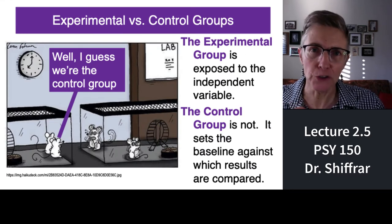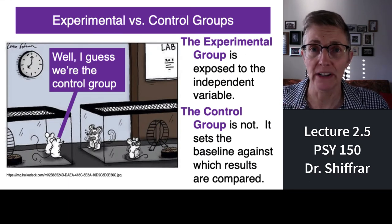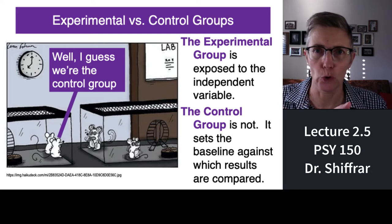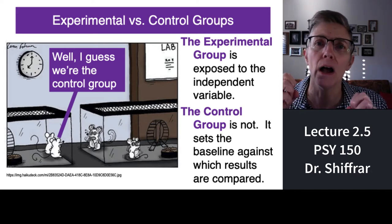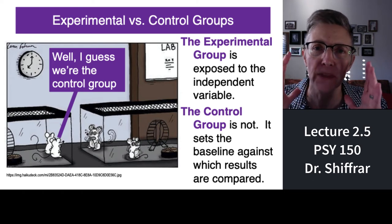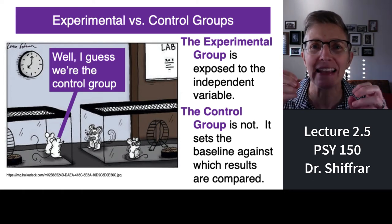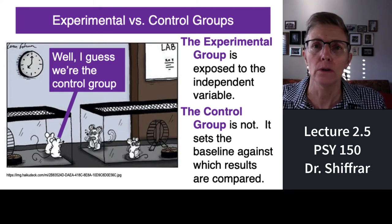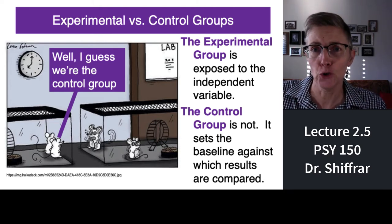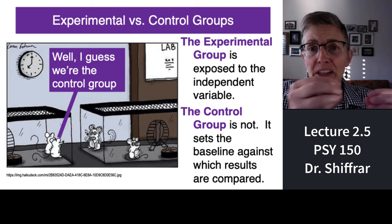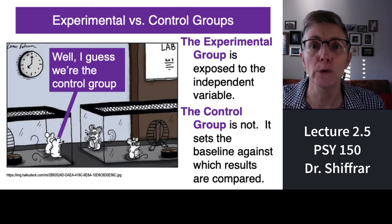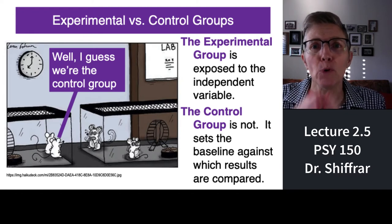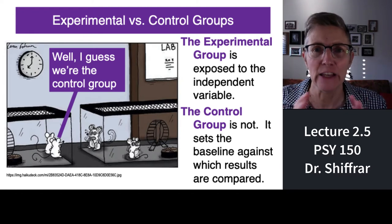There's another term you need to know for experimental studies: the difference between an experimental group and a control group. In an experimental group, everybody gets the independent variable. So in the IQ and breastfeeding example, it would be the kids who got breastfeeding who would be in the experimental group.